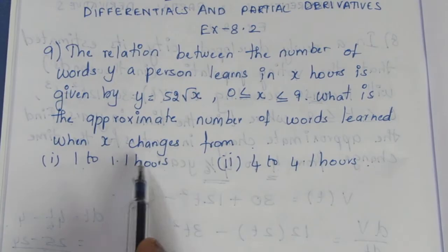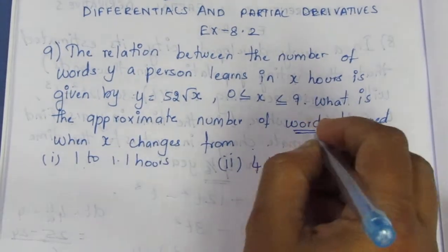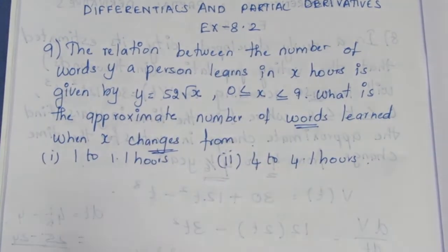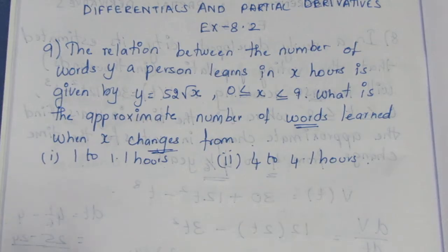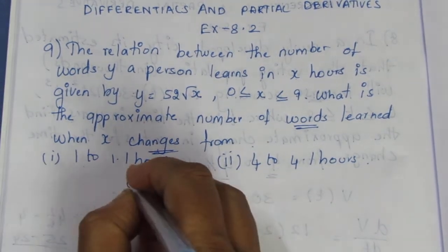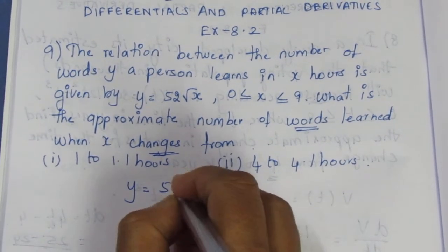We need to find how many words are learned. To do this, for the change we need to differentiate this formula. So y = 52√x.